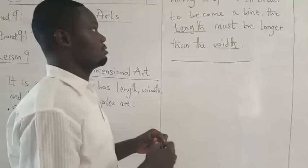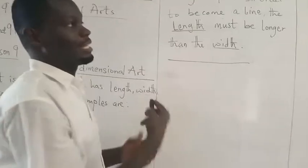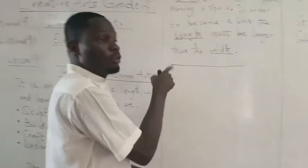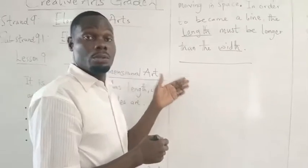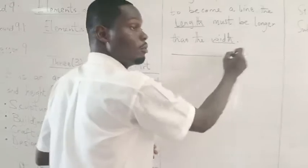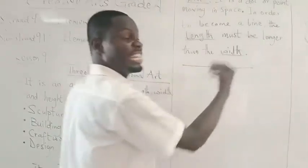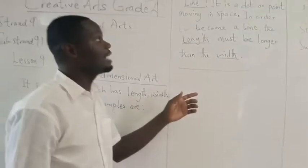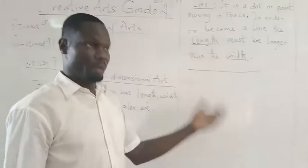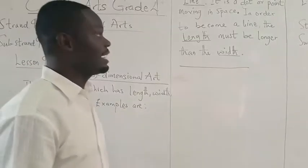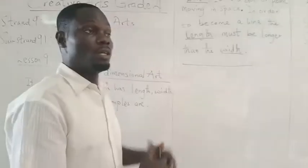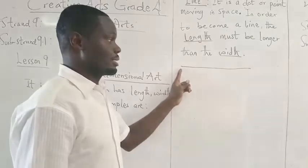Do you get that? That's why we are saying that a line is a dot or point moving in space. So before you draw, you have your roller, and then you put it down, and when you start moving, it means you are moving in space. That's why we say a line is a dot or point moving in space. But remember, in order for a line, the length must become longer than the width.